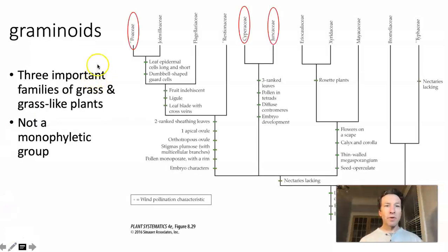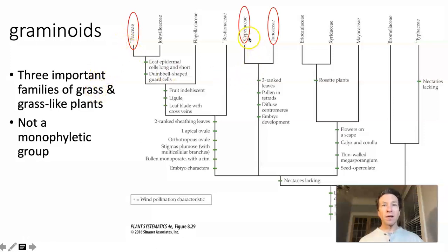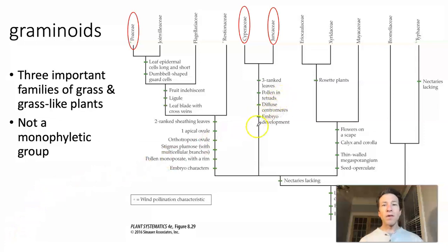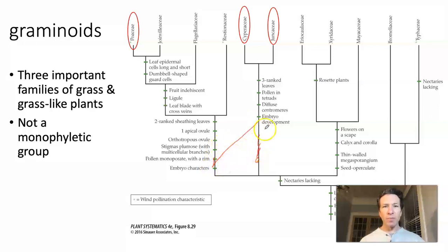The graminoids include all three of these families, and they are all either grass itself — Poaceae — or plants that have a similar growth form to grass, which is Cyperaceae and Juncaceae. Importantly, these three are not a monophyletic group, as you can see on the phylogeny shown here. The phylogeny is a little complicated because we have a polytomy, with three things branching off. Even in a simplified scenario without the polytomy, we can see this is not a monophyletic group.